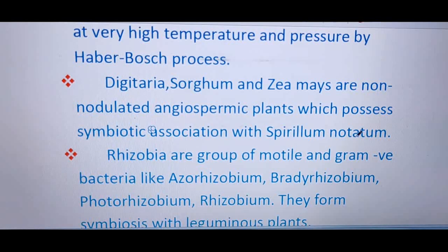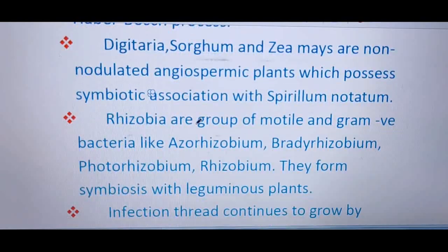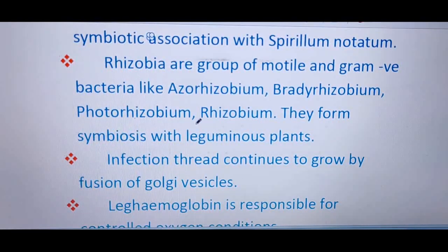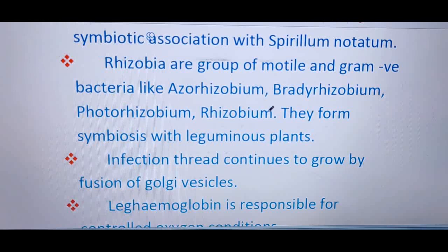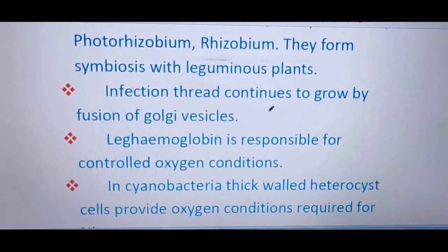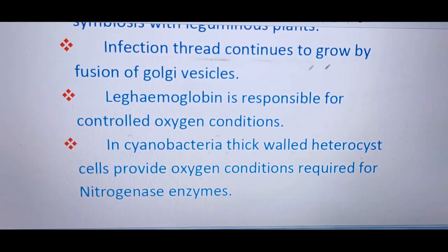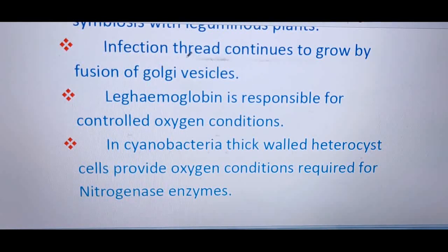Desulfovibrio, sorghum, and Gunnera are non-nodulated angiospermic plants with symbiotic association with Spirillum notatum. Rhizobia is a group of motile, gram-negative bacteria including Azorhizobium, Bradyrhizobium, Photorhizobium, and Rhizobium — they form symbiotic associations with leguminous plants (Fabaceae family). The infection thread continues to grow by fusion of Golgi vesicles as Rhizobium infects the plant.